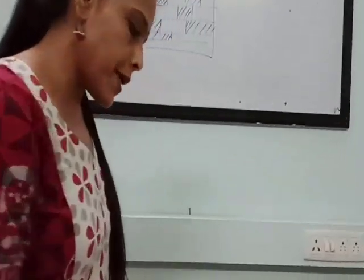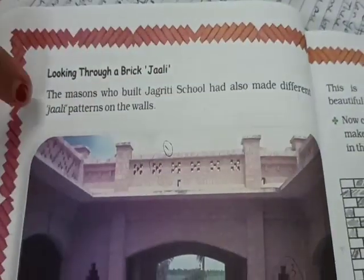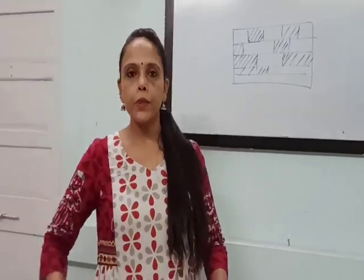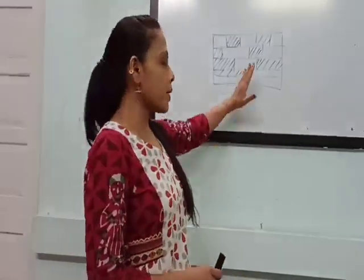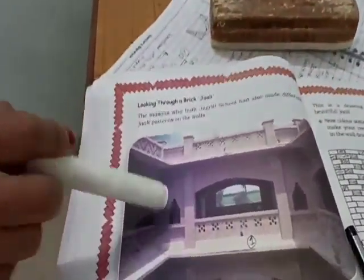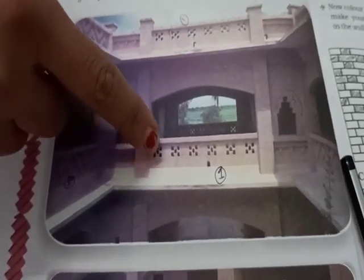The masons who built Jagriti school had also made different jali patterns on the walls. In the previous part we studied that masons made different floor patterns with bricks; they also made walls. Different jali patterns are shown in these pictures — some part is brick and some part is empty, forming the jali pattern. Observe carefully each pattern — each pattern should be different.